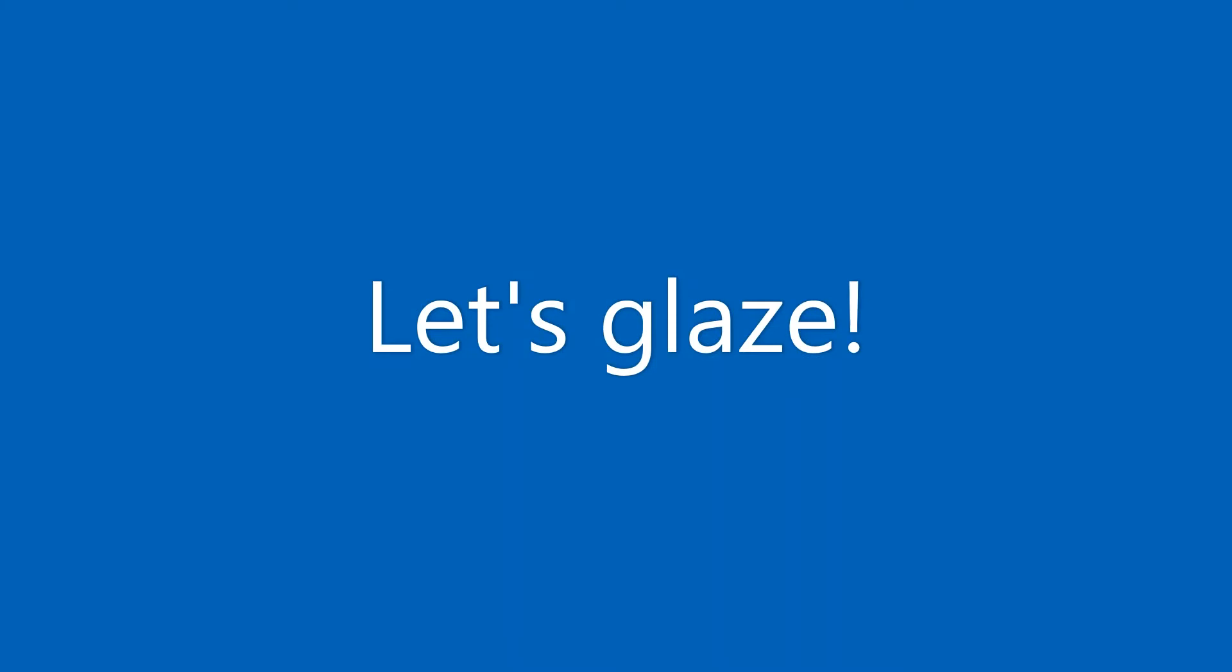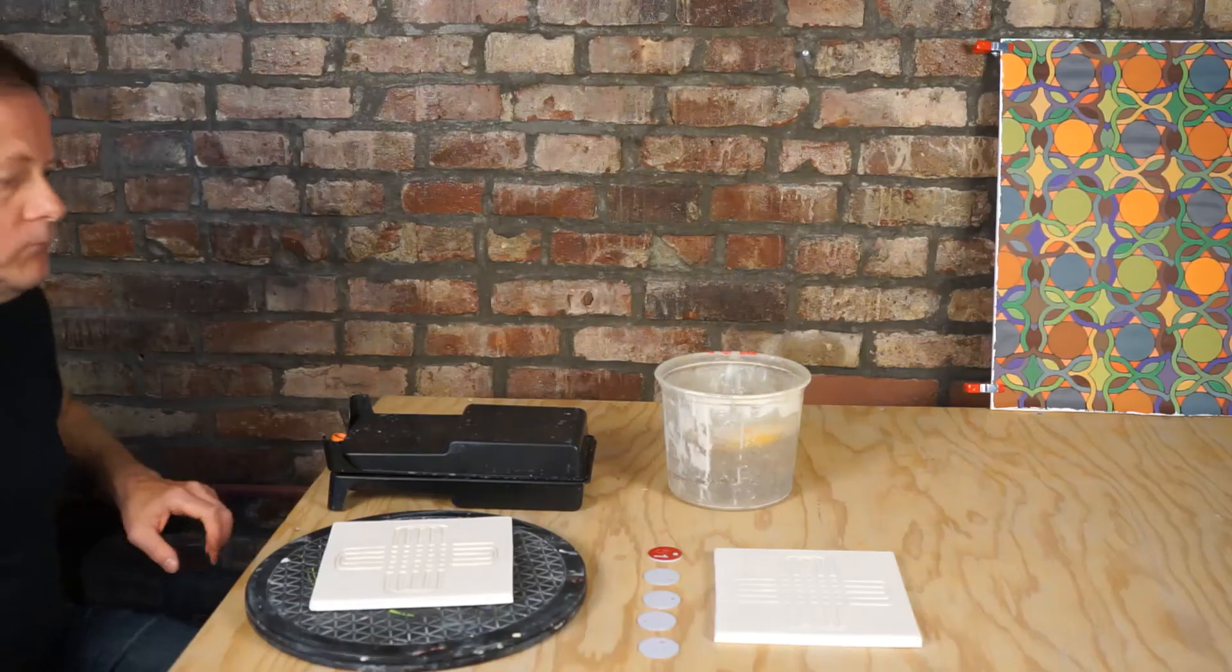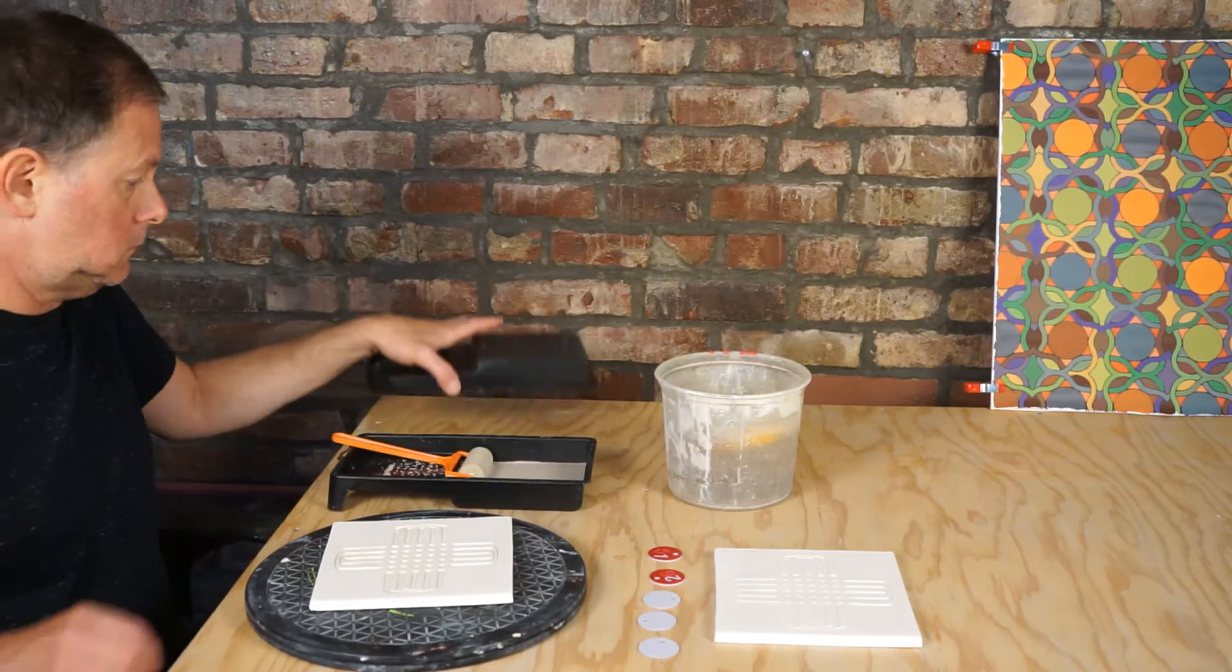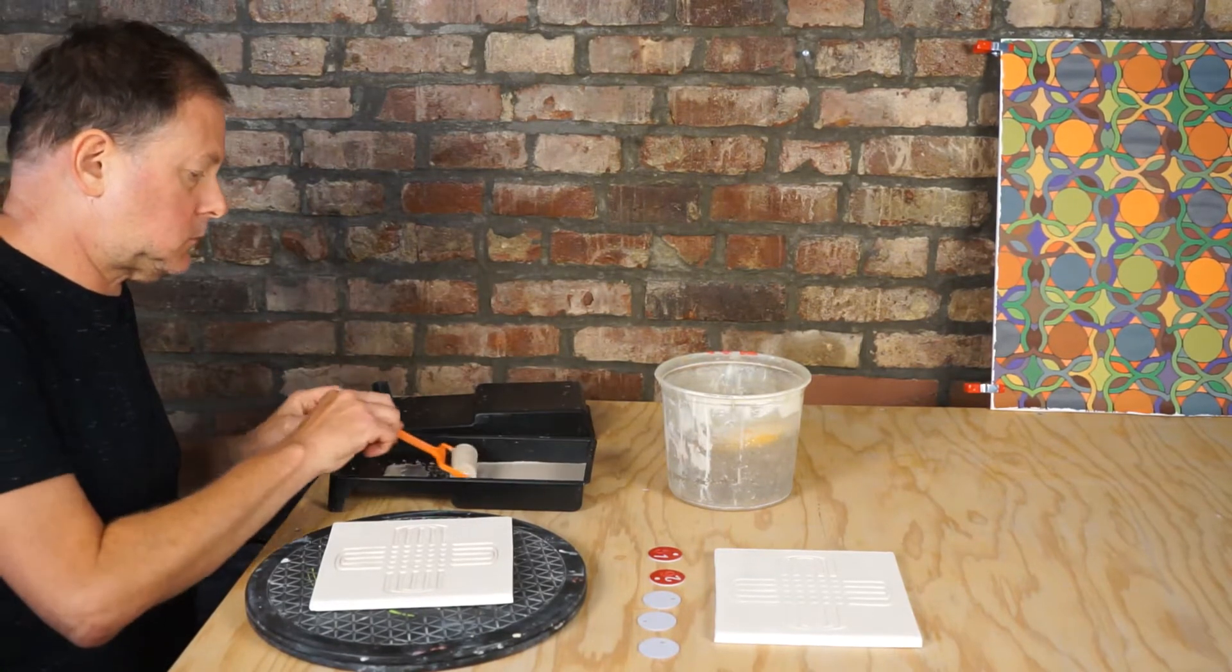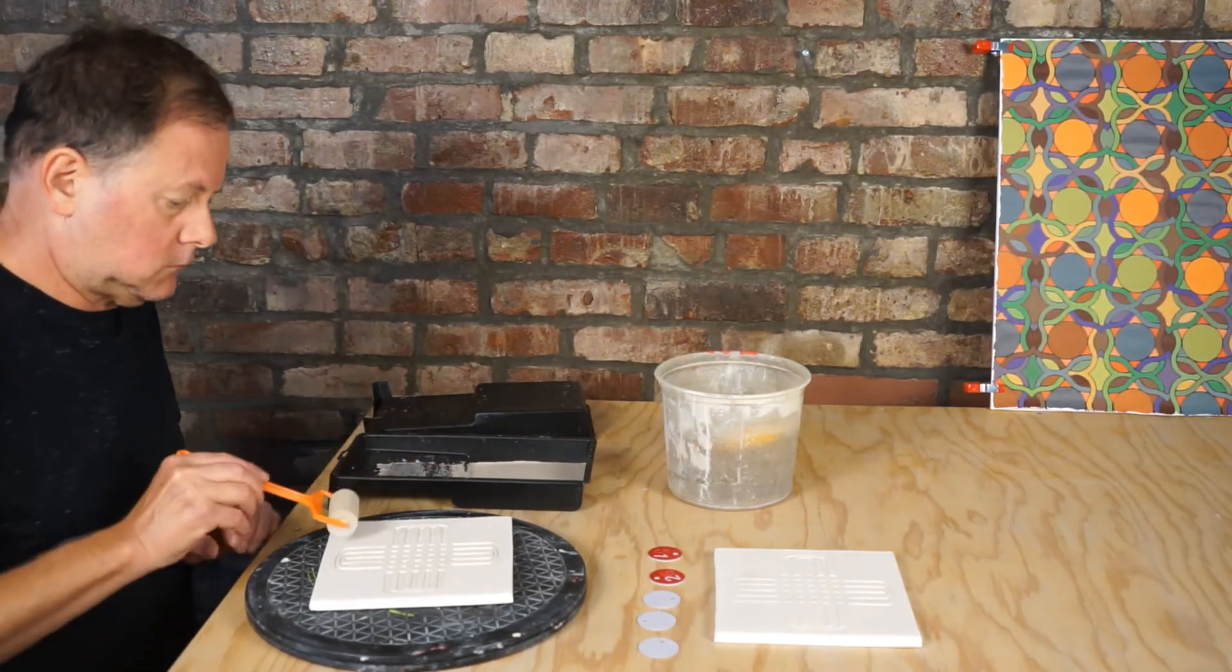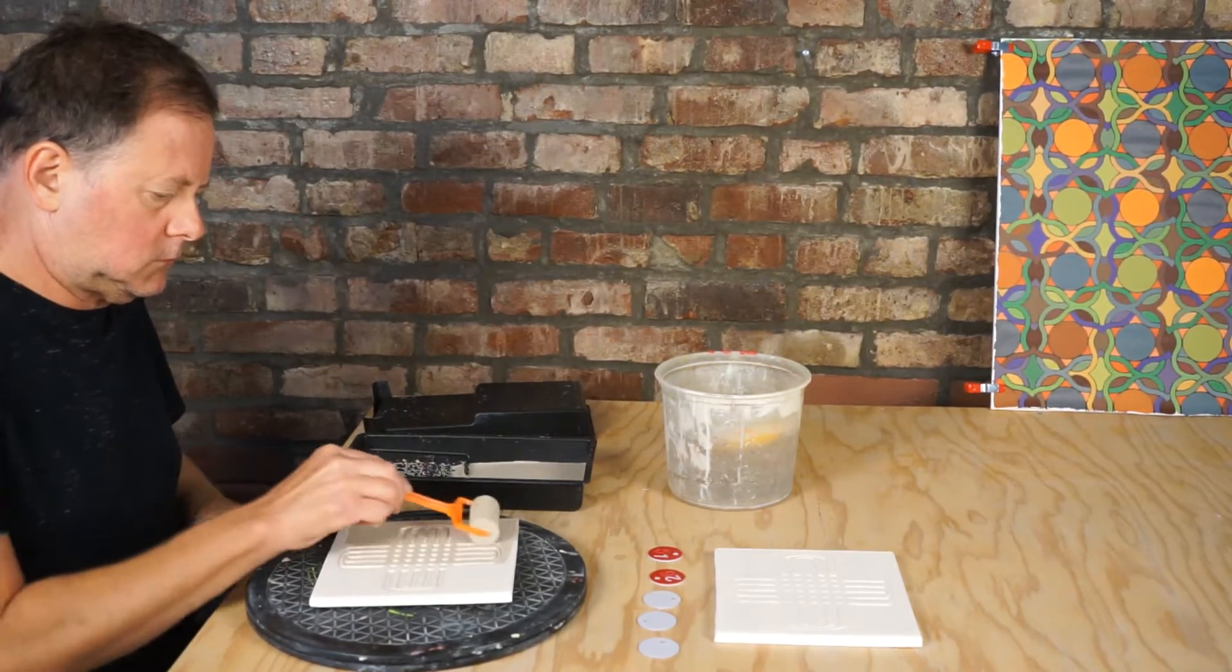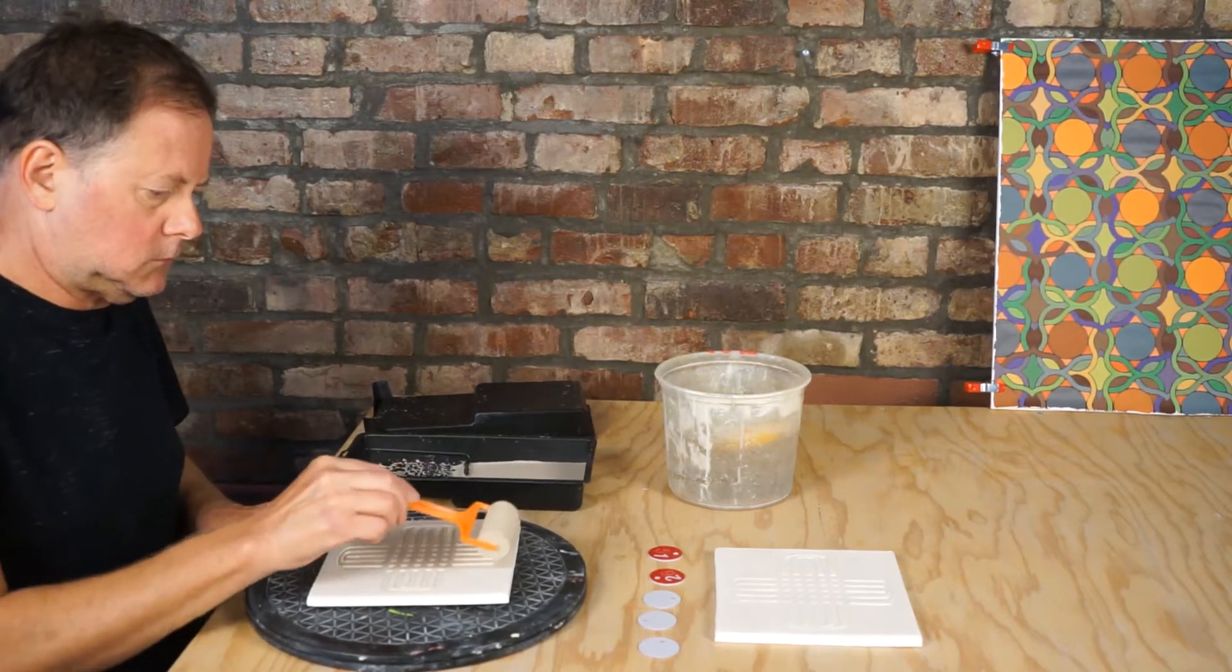I'm going to use a speckled glaze on these two tiles. I've learned that five coats of this glaze works the best. Because I make tiles and not that 3D pottery stuff, I can use a foam roller to apply the glaze.